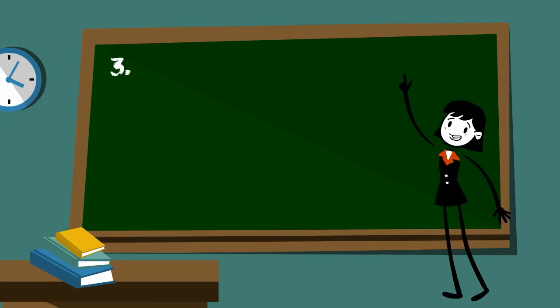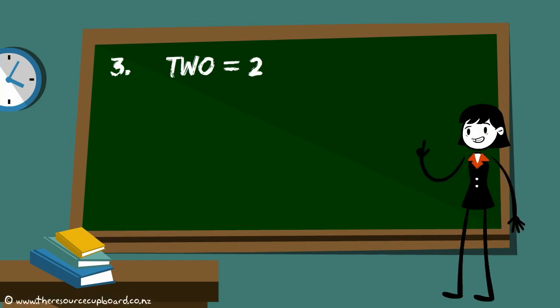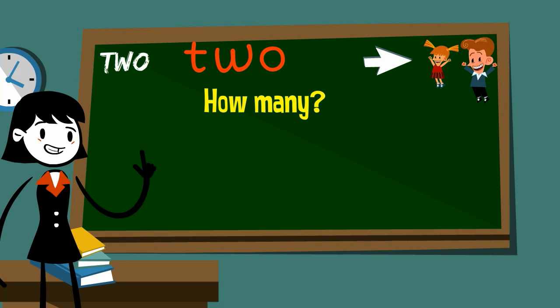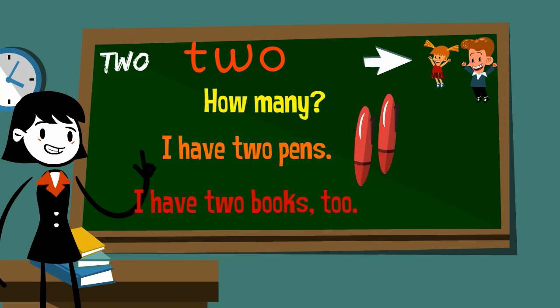Number three, two. Number three, two is the number two. T-W-O. It tells us how many. I have two pens. I have two books. Two.